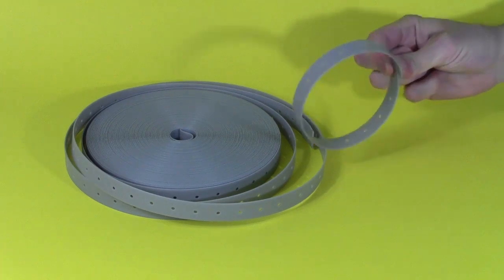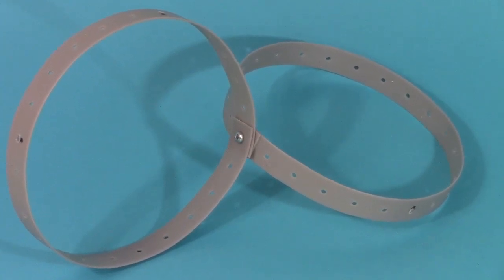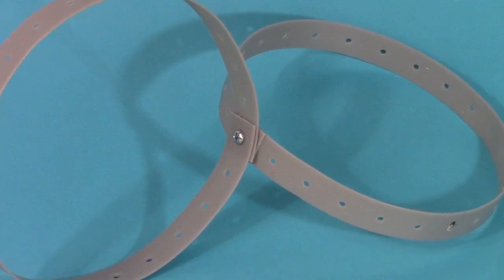The thing it's best at is forming a circle. It has holes in it, although they're kind of small, but you can join the circles together with little nuts and bolts to form larger structures.